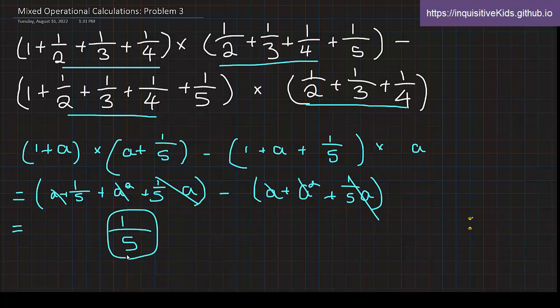There's another way to do this as well, actually. So you can think of this as sections of a fish, I guess. So one-half plus one-third plus one-fourth, you can think of as the fish body. The one, you can think of as a fish head. And you can think of one-fifth as a fish tail. So the body is always there, right? So you first have the head and the body times the body and the tail minus the entire fish times the body.